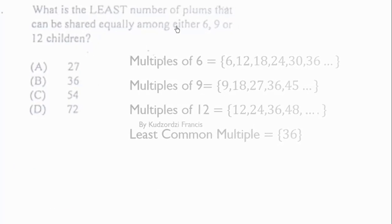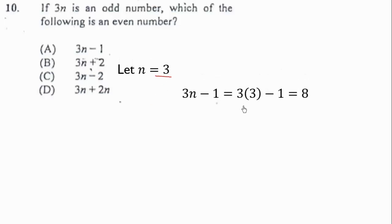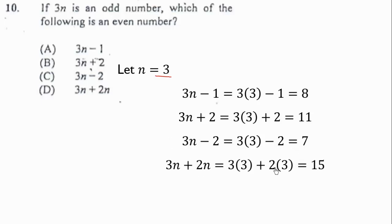Question 10: if 3n is an odd number, which of the following is an even number? Let's pick n = 3. Then 3n minus 1 = 9 minus 1 = 8, which is even. Checking the other options: 3n plus 2 = 11 (odd), 3n minus 2 = 7 (odd), and 3n plus 2n = 15 (odd). The only even result is 3n minus 1, so that is the correct choice.